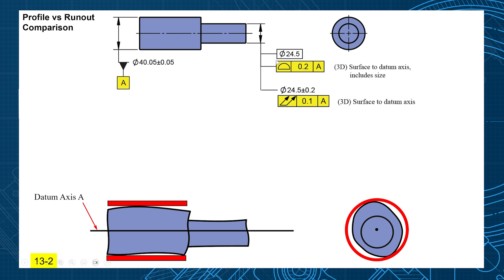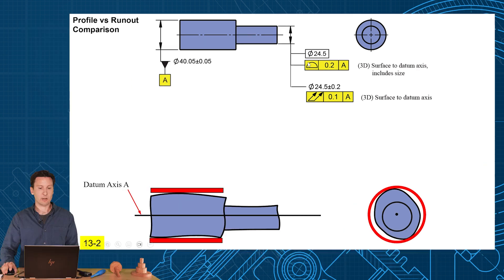And the two options that I have now are profile or runout. Now notice the difference between these. Profile requires a basic dimension for the size, where runout always requires a size tolerance. So those are going to be the two key differences in seeing these surface control differences.